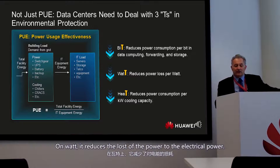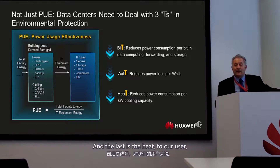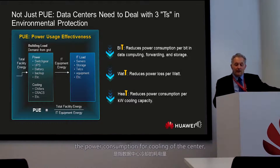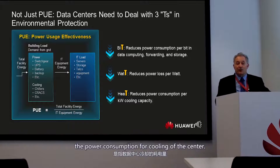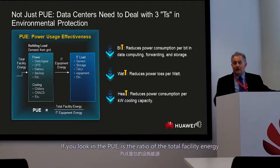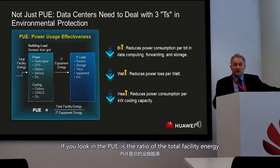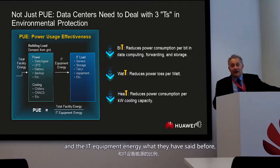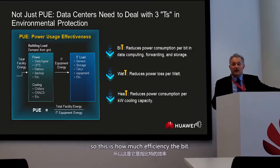The watt dimension is about reducing the loss of power during management of electric power. The heat dimension is about reducing power consumption for cooling. PUE is the ratio of total facility energy to IT equipment energy, so it doesn't capture how efficiently bits are processed.